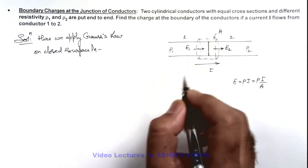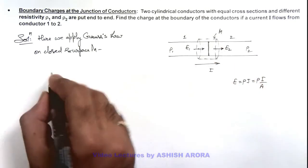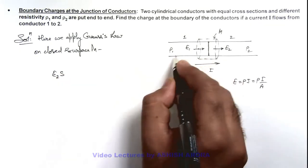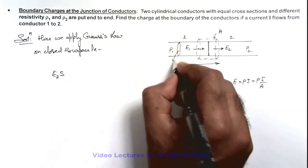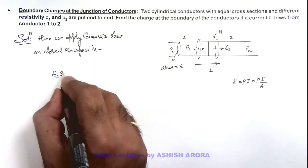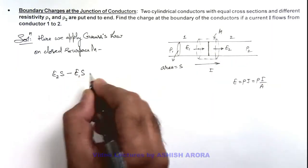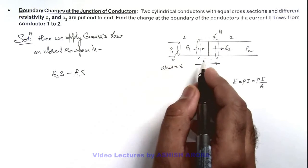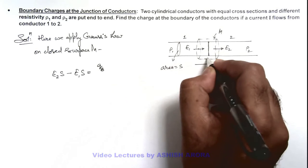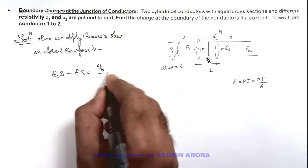Through its lateral surface, no electric flux is there. Here we can write: E₂ multiplied by S, if S is the cross-sectional area of this conductor. We consider its cross-sectional area to be S. Then E₂·S is the flux which is coming out, minus E₁·S is the flux which is getting into the surface M. This can be written as qb, that is, the charges appearing on this boundary, which I can denote as qb, divided by epsilon.